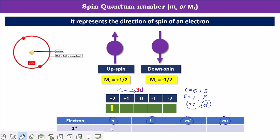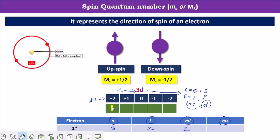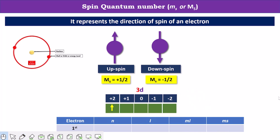So I am writing these values: for principal quantum number, the value is 3; for d orbital, the value of l is 2. Then we have to find out the value of magnetic quantum number. The electron is located in the first orbital, which represents the ml value of plus 2. And finally, we have to calculate the value of ms, the spin quantum number. In this case, the electron has upspin, and for upspin the value is plus 1/2.